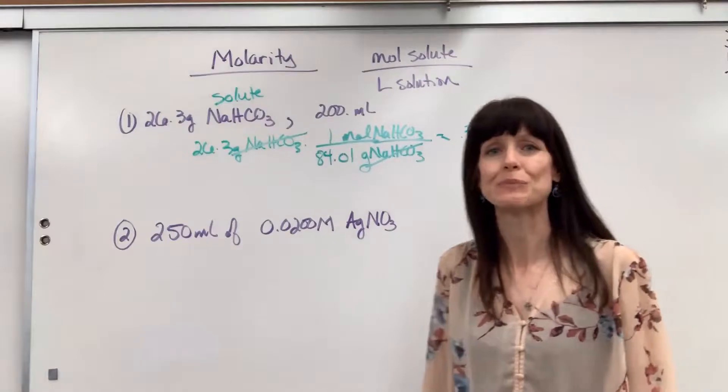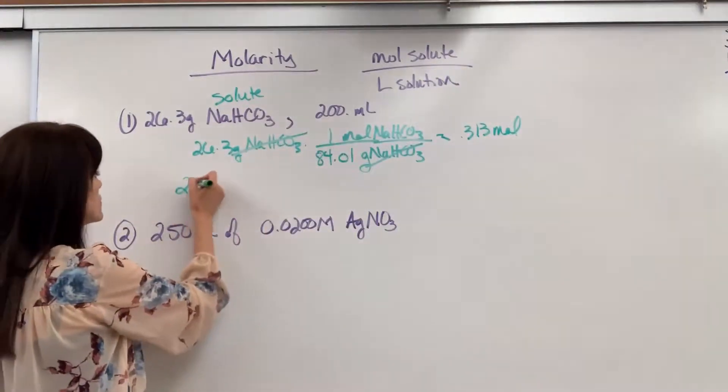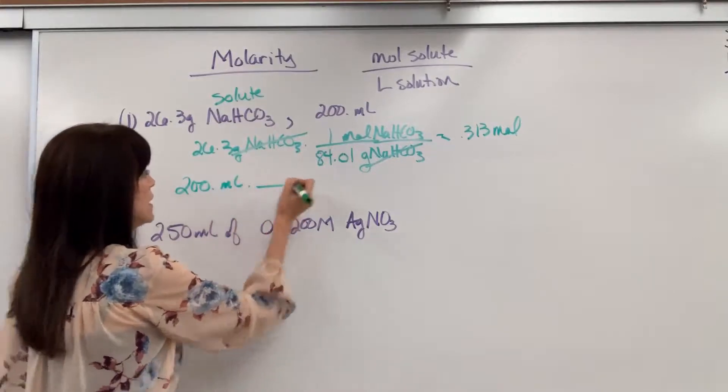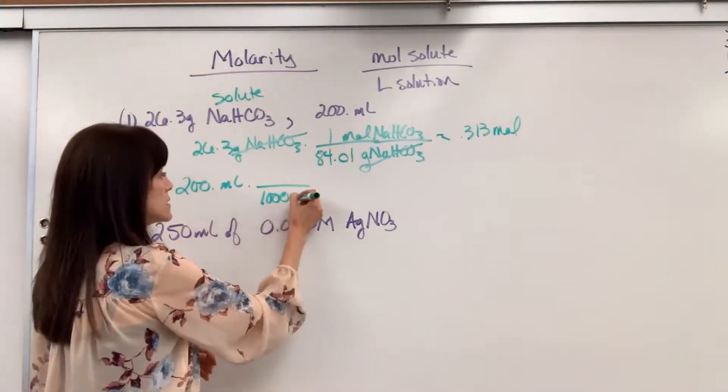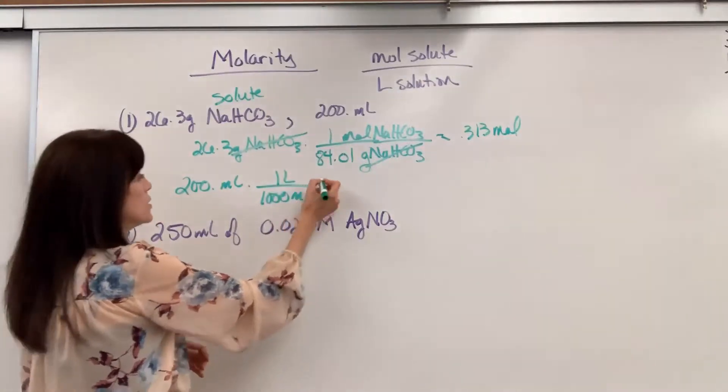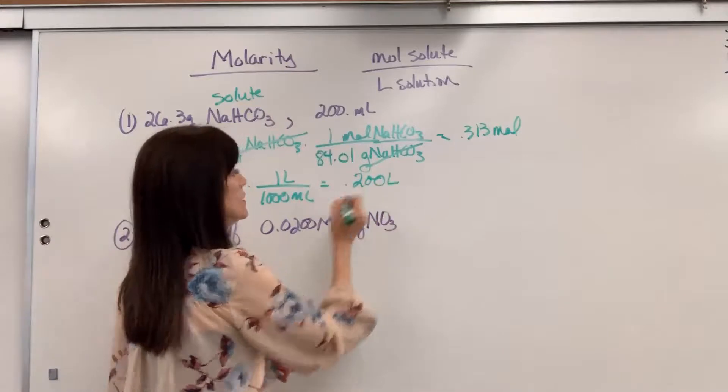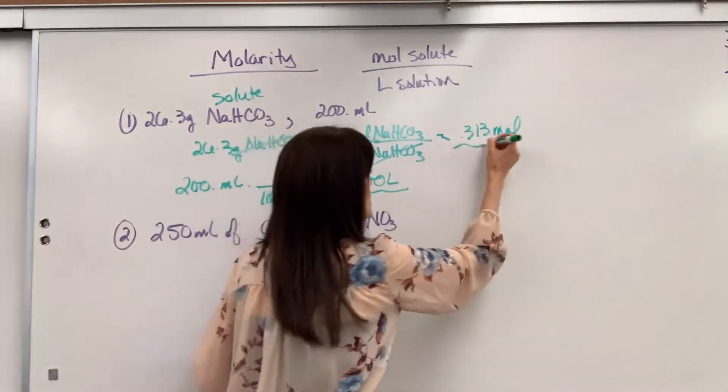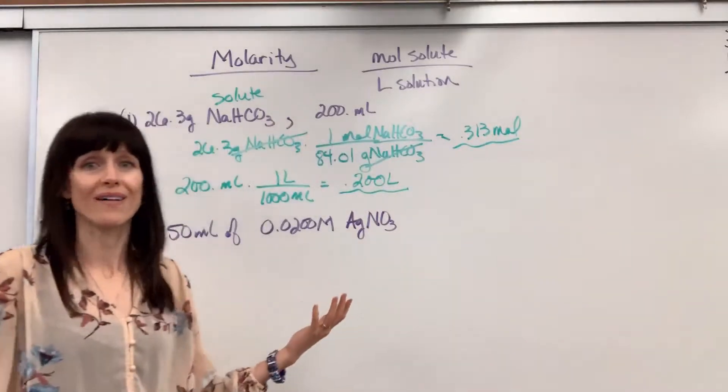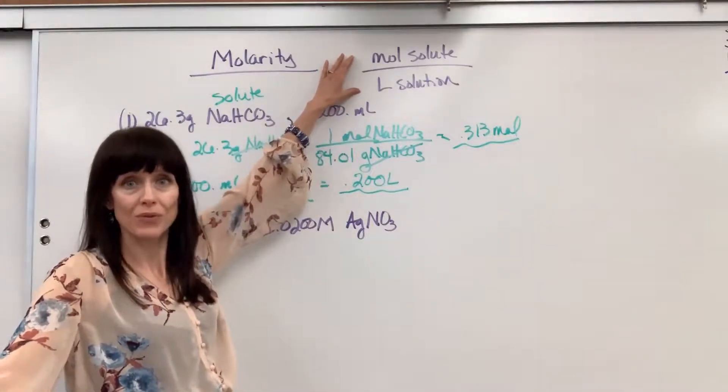Next, I gave us mils, but we need liters. So we need to take the 200 mils and just go from mils to liter. There are a thousand milliliters in one liter. So that will give us 0.200 liters. Nice. Notice liters, moles. Now all I have to do is plug it in to my ratio, mole over liter.